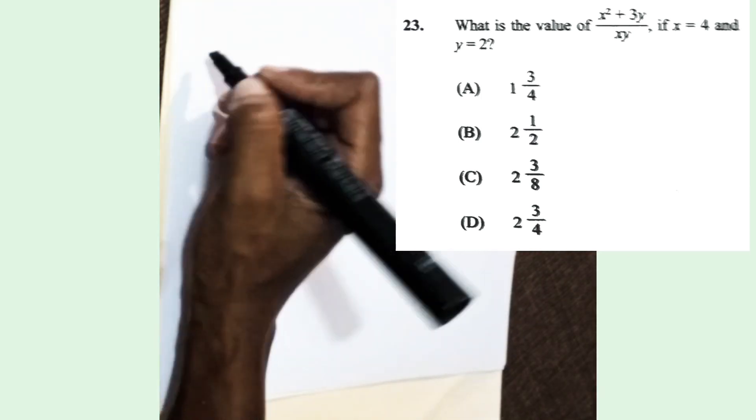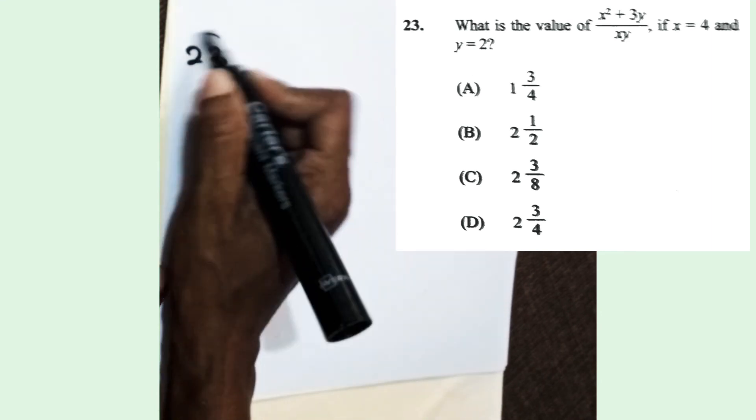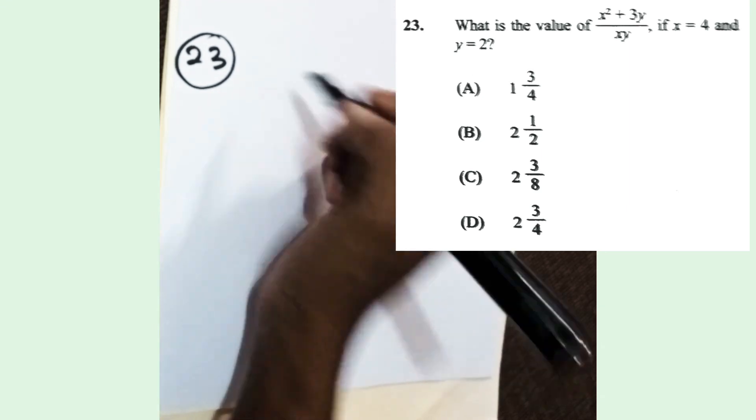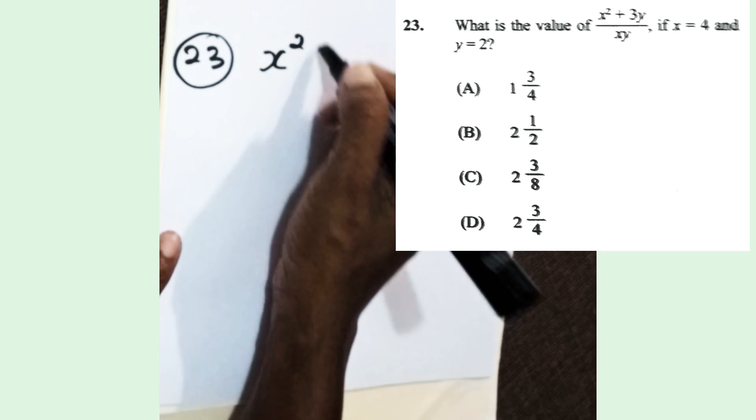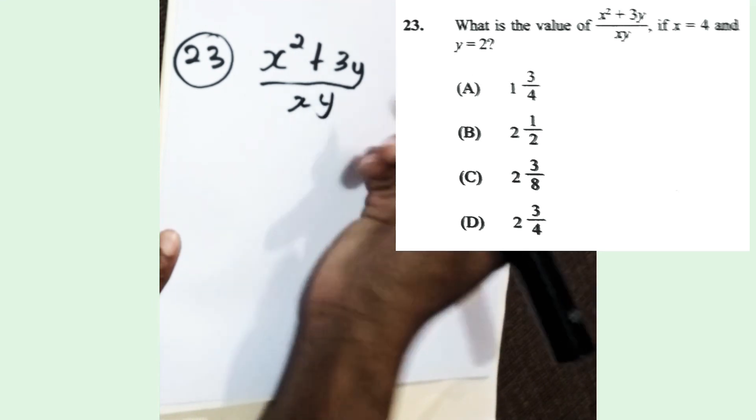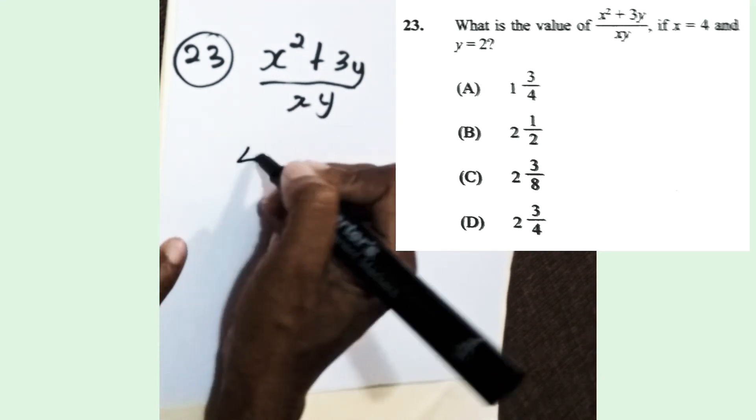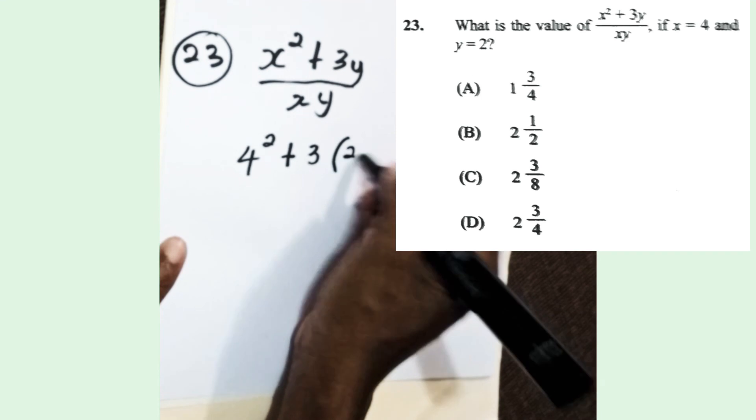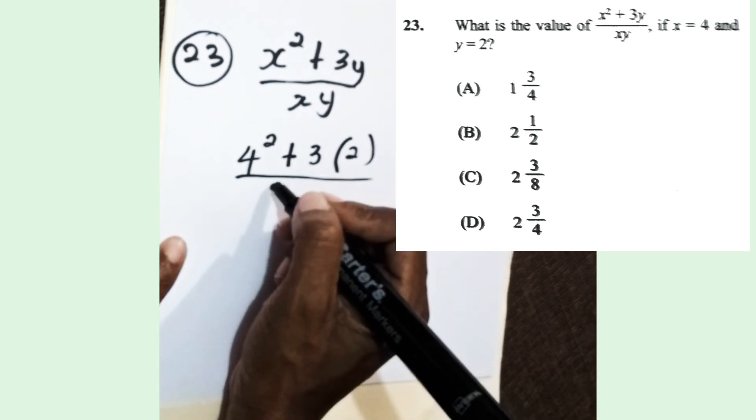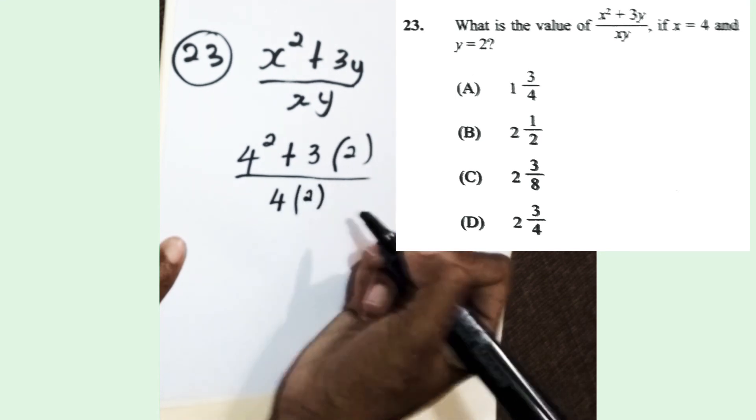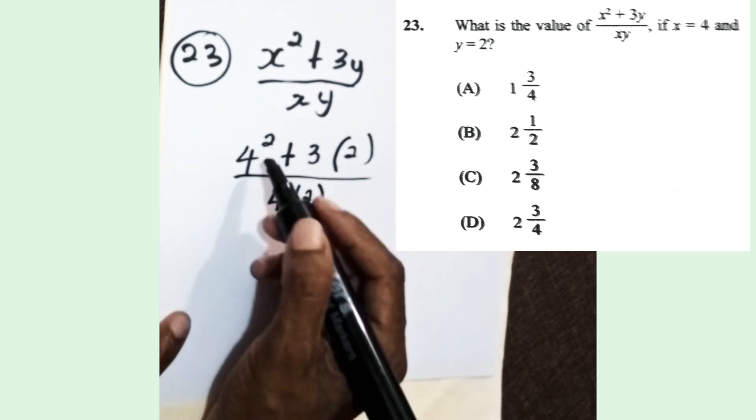Let us move to 23, another algebra question from last year's paper. What is the value of the square root of x squared plus 3y all over xy, if x equals 4 and y equals 2? All we need to do is substitute these values. Wherever we see x, put 4, and where we see y, put 2. Make sure you're doing the correct operation. We square the 4 because x is 4, and then we multiply 3 by 2 because y is 2.